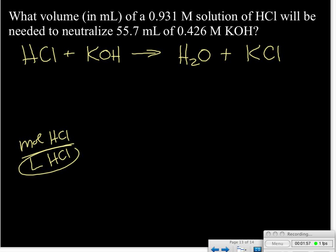Right there is our volume information, but right now it's the denominator—we want that on top. So we're going to flip this upside down and say, okay, for every one liter of our hydrochloric acid solution, we have 0.931 moles of our hydrochloric acid solution.